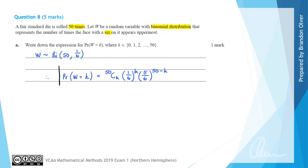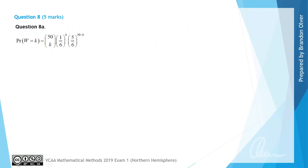That is the answer to part A. From the examiner's report we can see they got a similar answer, with the only difference being another way of representing 50 choose K. So both of those answers would be acceptable.